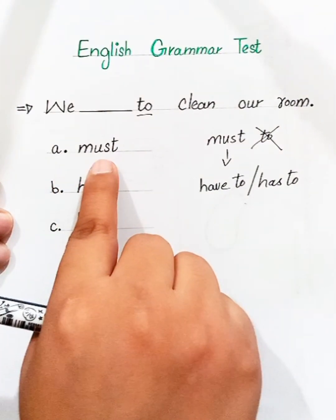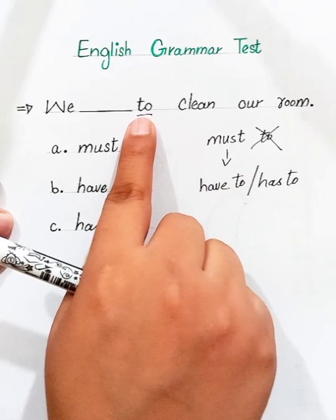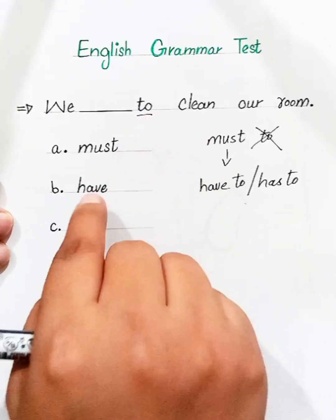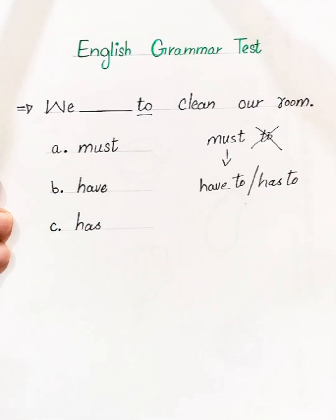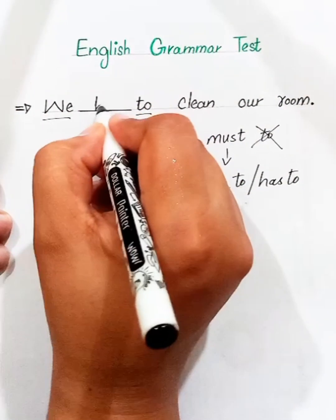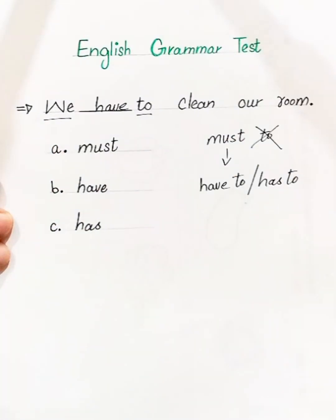The word must doesn't follow by to, so we have to put here have or has according to subject. Our subject is plural, so we will write have. We have to clean our room.